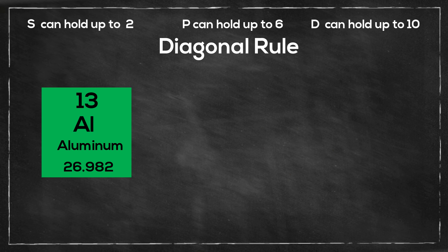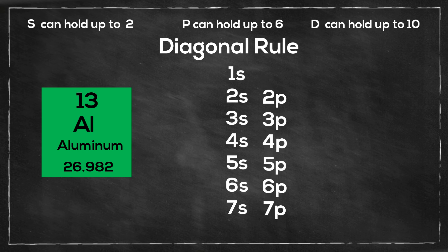First, let's draw the diagonal chart. I will start with the s orbital and number 1 through 7, then the p orbital, 2 through 7, then the d and the f.